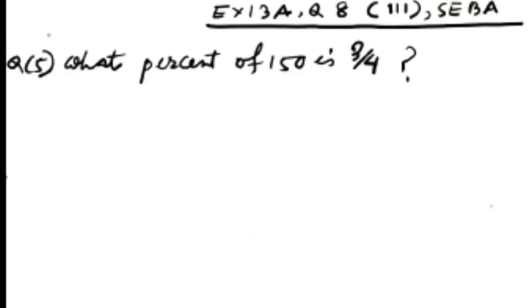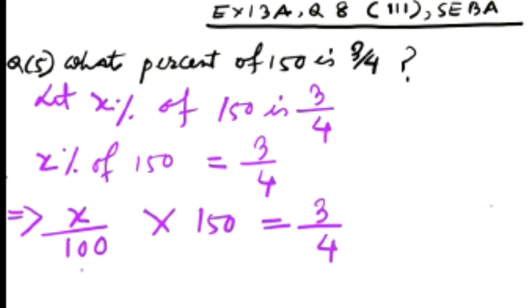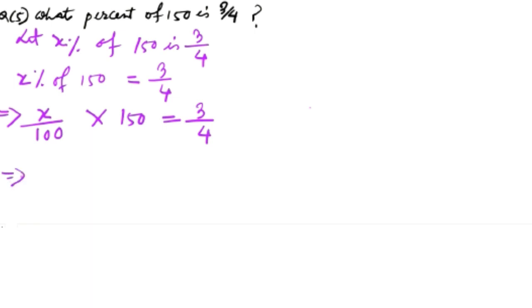Question number 5: What percent of 150 is 3 by 4? Here we will use a variable x, and afterwards we will find the value of x which will be the required answer. So let x percent of 150 is 3 by 4. So therefore x percent of 150 is equal to 3 by 4. I am writing here, this is equal to 3 by 4. X percent means x by 100, of means multiplication, into 150 is equal to 3 by 4. Right? So this implies x into 150 into 4 is equal to 100 into 3.